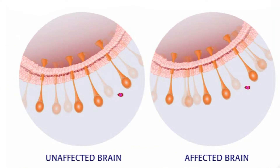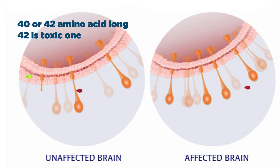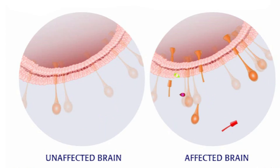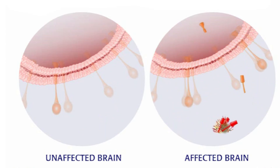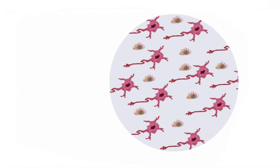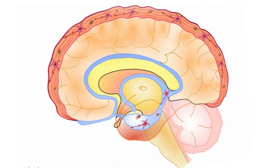The beta amyloid fragment is either 40 or 42 amino acids long. The version most toxic to neurons seems to be beta 42. Once formed, beta amyloid is either degraded and cleared from the brain, or it remains in the brain, accumulating in clumps between neurons to become plaques.